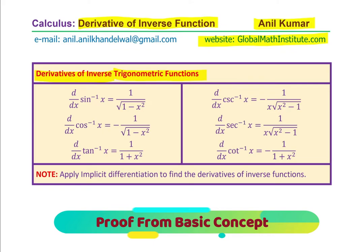This is a very important part of calculus, normally part of calculus 2 or higher. We will prove all the given derivatives: derivative of sine inverse x is 1 over square root of 1 minus x squared; derivative of cos inverse x is minus 1 over square root of 1 minus x squared; derivative of tan inverse x is 1 over 1 plus x squared; derivative of cosecant inverse x is minus 1 over x times square root of x squared minus 1; derivative of secant inverse x is 1 over x times square root of x squared minus 1; and derivative of cotangent inverse x is minus 1 over 1 plus x squared.